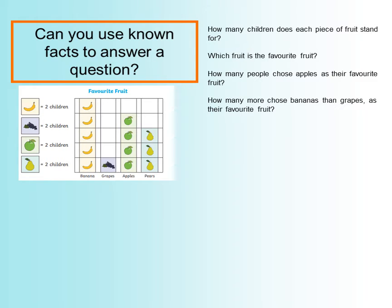Here is a graph showing different fruit that children like. Have a look at the key on the left — each picture of a banana represents two children who picked that fruit as their favourite. Each bunch of grapes is two children, and the same for apple and pear. Looking at the graph overall, which fruit is the favourite — which fruit have most children picked? Well done if you identified banana as the favourite fruit.